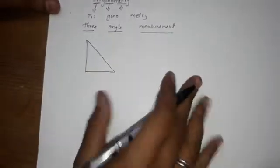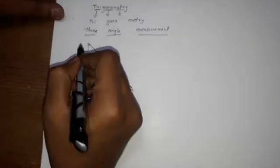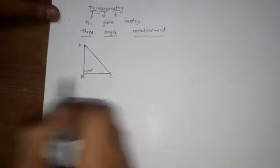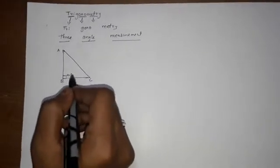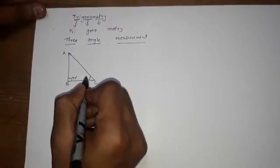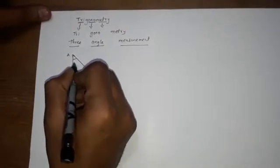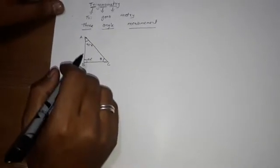This chapter deals with a right angle triangle ABC. As we know, the sum of interior angles of a triangle equals 180 degrees. We have 90 degrees here; if I take this angle as theta, then this angle will be 90 minus theta. These are two complementary angles.